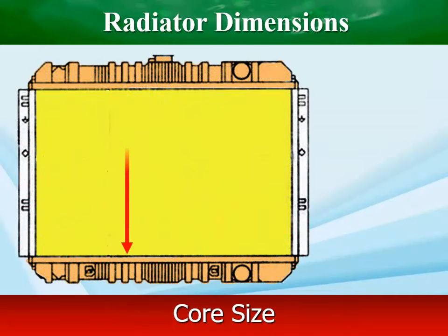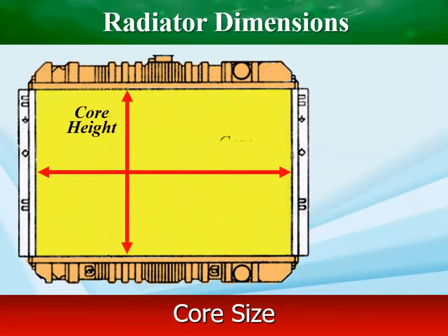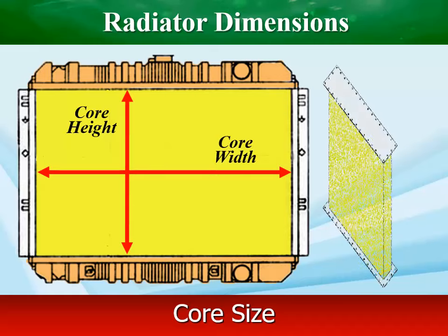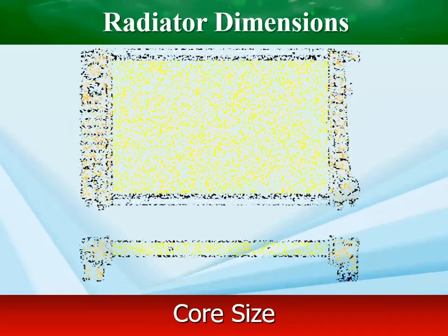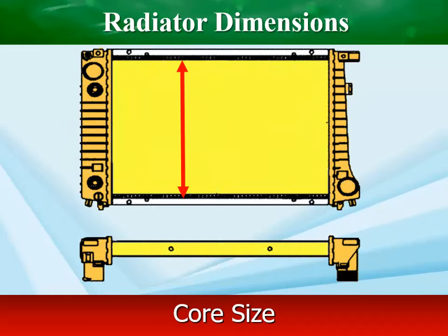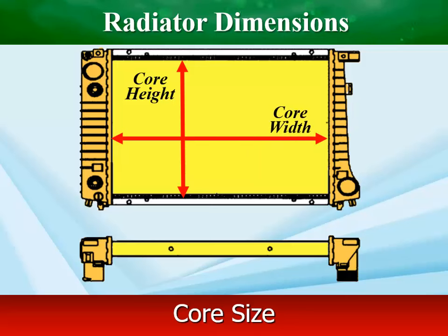Radiators are generally rated according to their core dimensions and the number of rows of tubes used. Larger cores and more tubes mean increased capacity.